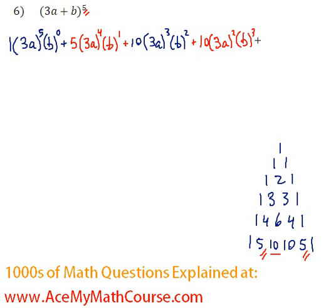Now we have a 5, so we have 5 times 3a to the 1, b to the 4. And the last term would be 1 times 3a to the 0, b to the 5. I'm running out of room again.